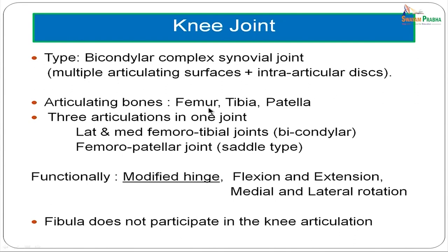The articulating bones are the lower ends of the femur, the upper ends of the tibia, and the patella. Within one knee joint there are three articulations: the lateral and medial femorotibial joints, which are bicondylar, and the femoropatellar joint, which is a saddle type. Functionally, the knee joint can be called a modified hinge joint, with primary movements of flexion and extension, and small amounts of medial and lateral rotation also possible. Note that the fibula does not take part in the knee articulation.